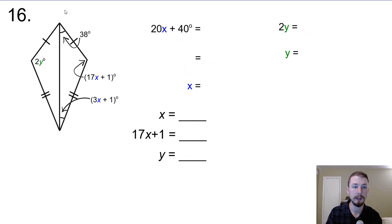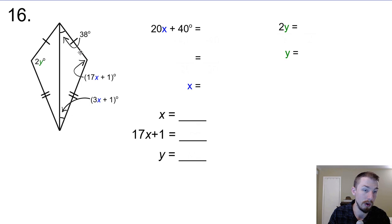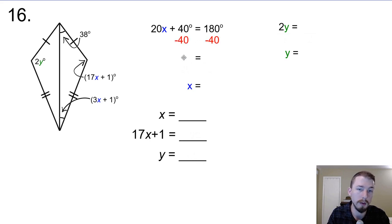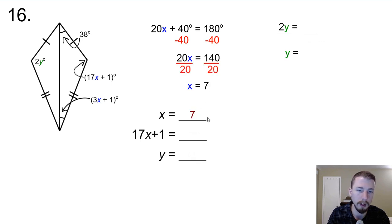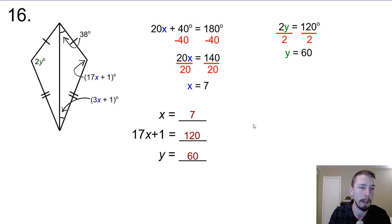For number 16, we have a kite with a vertical line of symmetry, so whatever's on the right side is mirrored on the left — meaning 2y equals 17x plus 1. But we can't solve for x and y simultaneously, so we first look at the triangle on the right side. Its angles add up to 180: 17x and 3x give us 20x, and 38 plus 1 plus 1 gives us 40. So 20x plus 40 equals 180, subtract 40, divide by 20 — x equals 7. Plugging that in: 17(7) plus 1 equals 120 degrees. By reflection, 2y equals 120, so y equals 60 degrees.